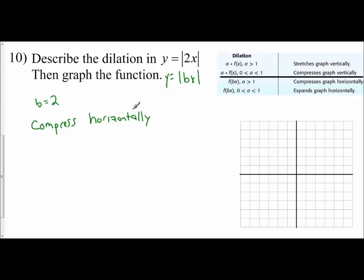We'll draw the original parent function: absolute value of 0 is 0, 1 is 1, 2 is 2, 3 is 3, and the negative values follow the same pattern. After all these videos, you should easily be able to graph parent functions. There's our parent function.